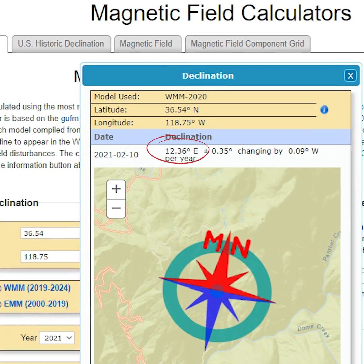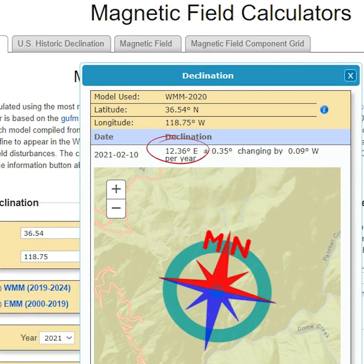How do we get this? Well, you'll see that magnetic north is 13 degrees east of grid north, and true north is 1 degree east. So, subtract 1 from 13 and you get 12, which is what an online tool tells you.